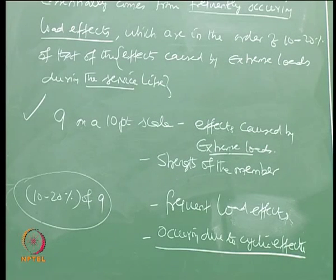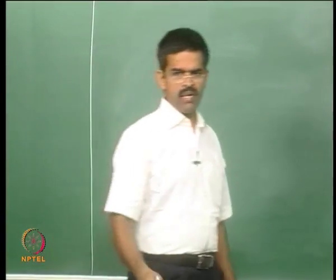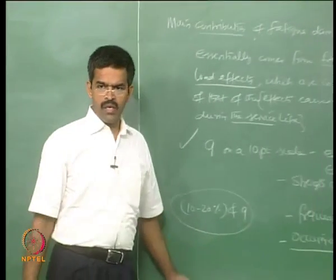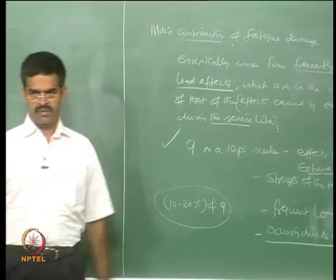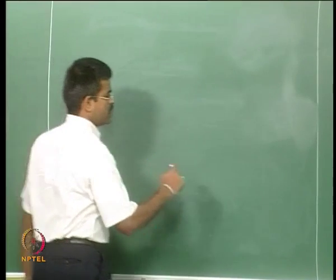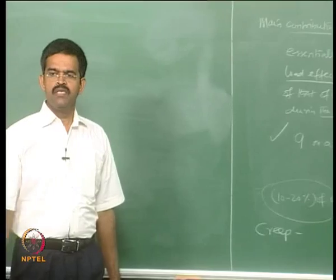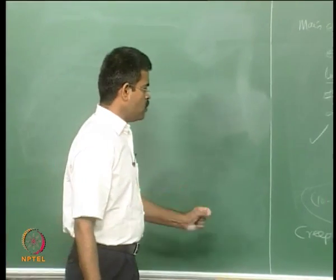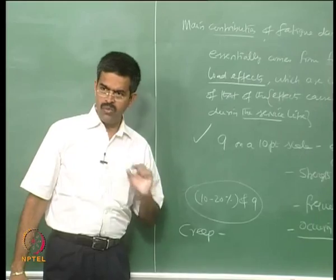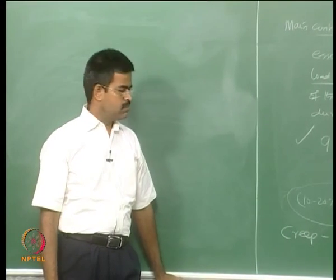Can you give another example of low-magnitude, long-term impact on materials similar to fatigue — but not necessarily cyclic? Creep is another example. Creep, especially in concrete, is a very important targeted value where the amplitude causing creep may be very low, but the effect is a long-term effect on the material. It may not be cyclic.